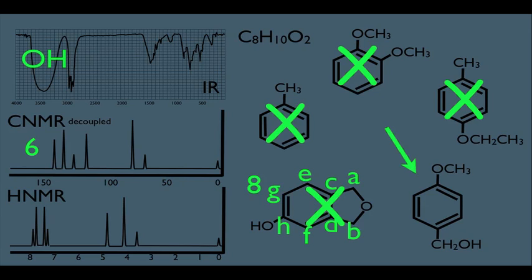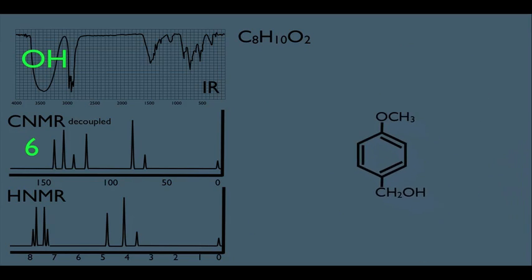But just to be sure, let's make sure our molecule does fit all of the data. Let's first see how many carbons it has. We'll call these C-type carbons because we do have symmetry in this molecule, this would be D-type carbons, this would be E, and this would be the F-type carbon. Notice that is six types of carbons, so that satisfies the CNMR.